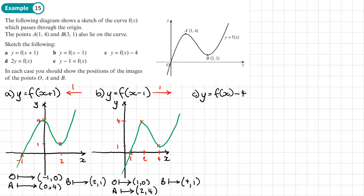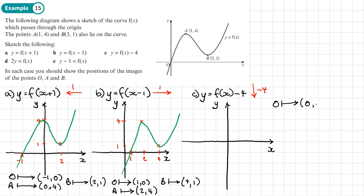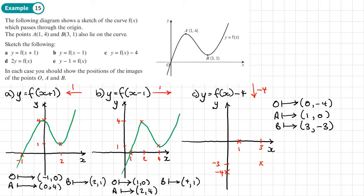For part c, y = f(x) - 4: this moves the whole graph down by four, so we subtract four from the original y coordinates. The origin becomes (0, -4), point A becomes (1, 0), and point B becomes (3, -3). Plotting those points and joining them up with the same shape.